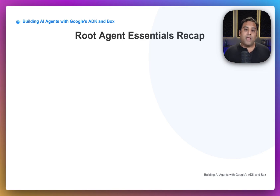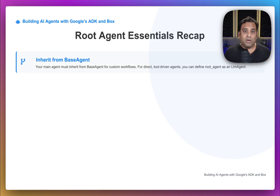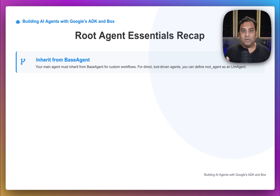To bring everything together, let's recap the essentials for creating a solid root agent in ADK. We've discussed two different approaches — the flexible custom workflow and the direct simple way. The first and most important point: decide on your agent structure. If you need a custom workflow with unique orchestration logic like conditional steps or loops, you must inherit from a base agent class and define your logic inside it. This is the path we took with our Box agent example.